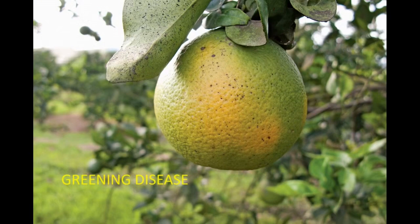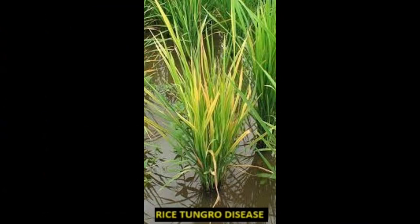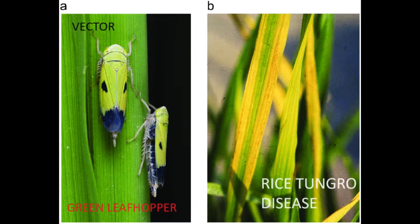Rice Tungro Disease is caused by a complex of two viruses: Rice Tungro Bacilliform Virus and Rice Tungro Spherical Virus. Infected rice plants exhibit stunted growth, yellowing of leaves, and reduced grain yield. The disease is transmitted by green leafhoppers.